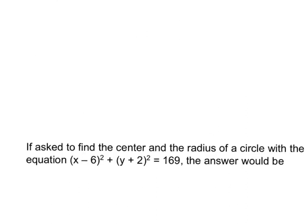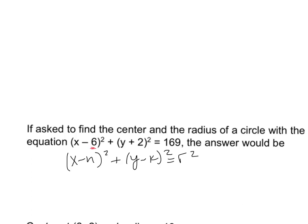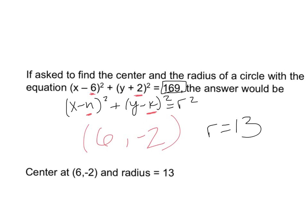Now working backwards to find the center and radius: write x minus h squared plus y minus k squared equals r squared. Analyzing the formula, 6 is h, and to get positive 2 inside the parentheses you need negative 2 for k. The radius is the square root of 169, which is 13. So the center is (6, −2) with a radius of 13. A helpful trick: just take the opposite of whatever number you see for x and y, then take the square root of the constant for the radius.